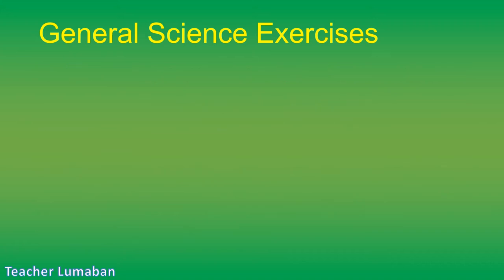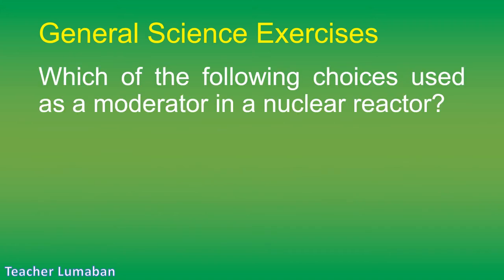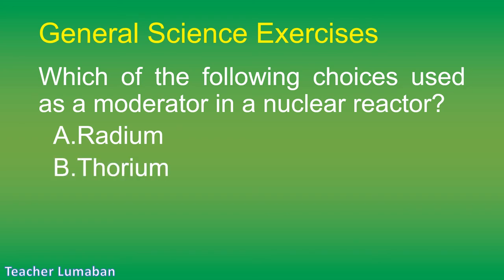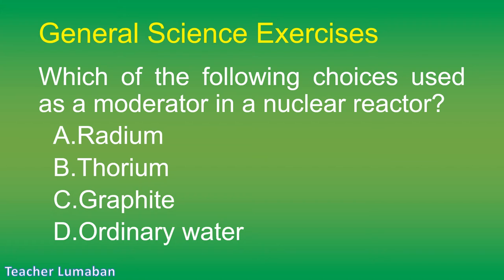Which of the following is used as a moderator in a nuclear reactor? Letter A: radium. Letter B: thorium. Letter C: graphite. Letter D: ordinary water.